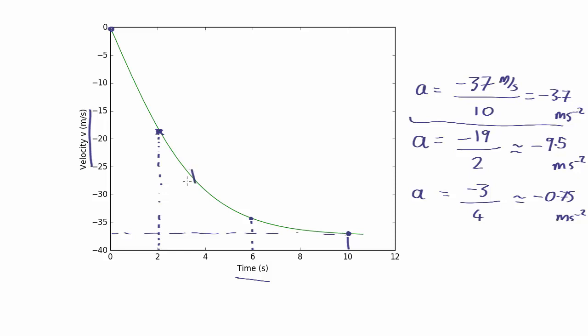What we really need is to measure the acceleration not over some time interval but at a point. But that's a bit tricky because acceleration is change in velocity divided by change in time. At a point, neither the velocity nor the time are changing. So how can you measure the rate of change of something at a point?